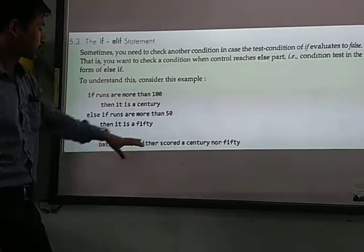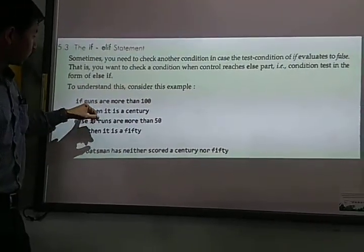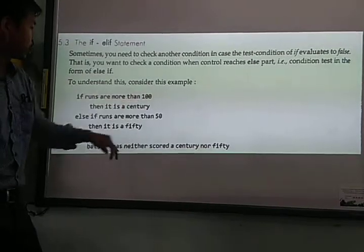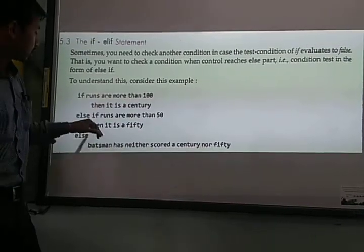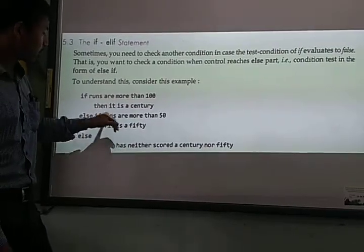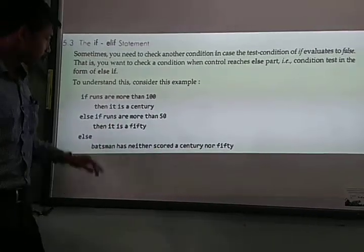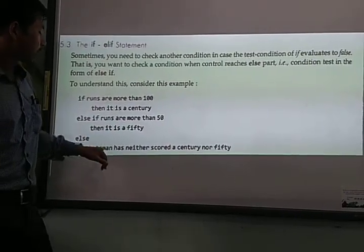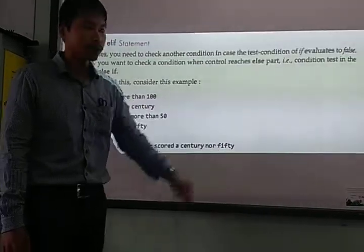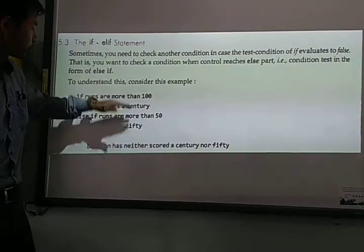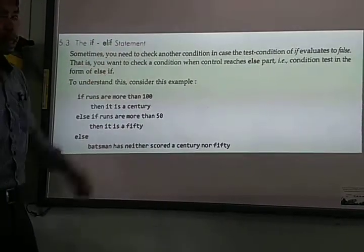This is a normal example. If runs are more than 100, then it is a century. Then, another condition is that if runs are more than 50, then it is a fifty. Then else, batsman has neither scored a century nor a fifty. So, how to program this using the elif?